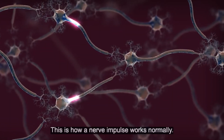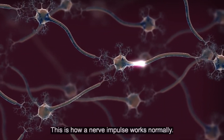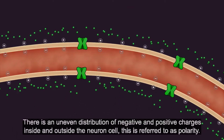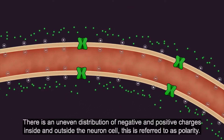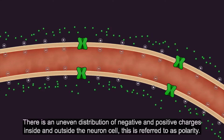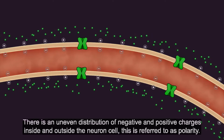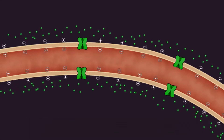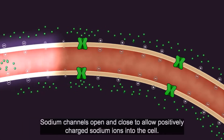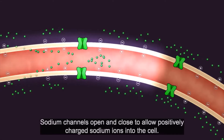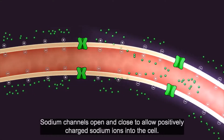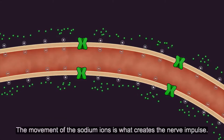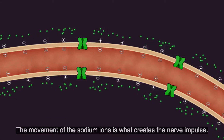This is how a nerve impulse works normally. There is an uneven distribution of negative and positive charges inside and outside the neuron cell. This is referred to as polarity. Sodium channels open and close to allow positively charged sodium ions into the cell. The movement of the sodium ions is what creates the nerve impulse.